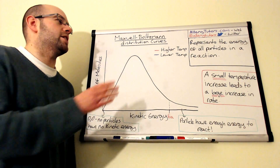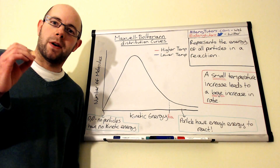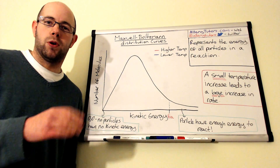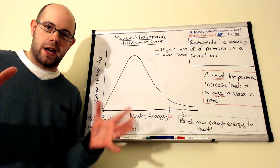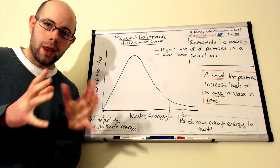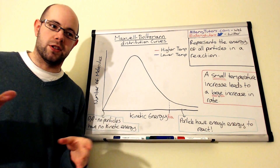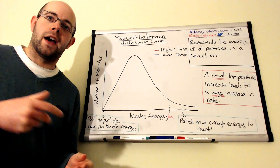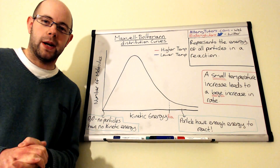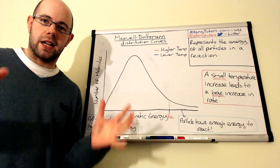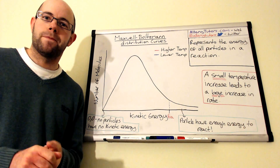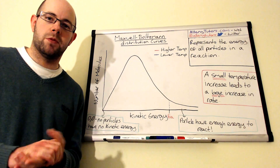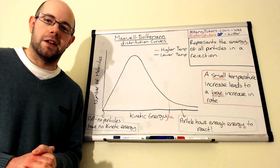A Maxwell-Boltzmann distribution is a curve that represents the energy of all particles in a reaction. Imagine you were in a shopping centre with a hundred shoppers — some will move slowly, window-shopping at a leisurely stroll, some will move at a reasonable pace, and some will walk at a really brisk pace. Everybody moves at a different speed but if we take an average they'll all move at one particular average speed. We can do the same with particles: some move really slowly, some at an average speed, and some really quickly.